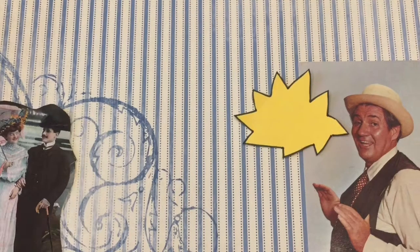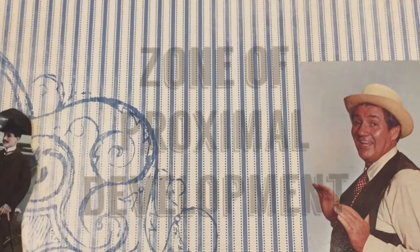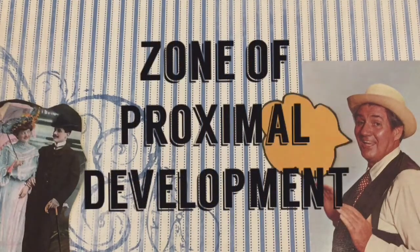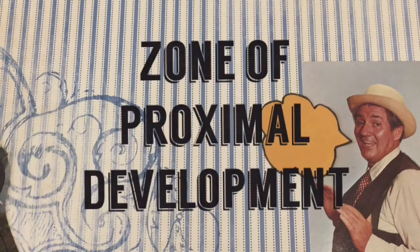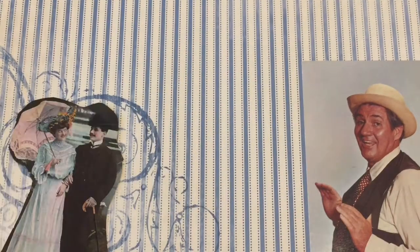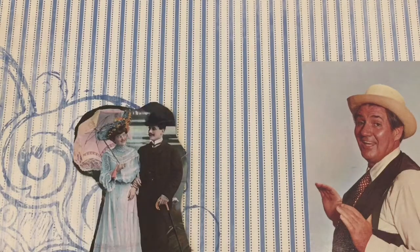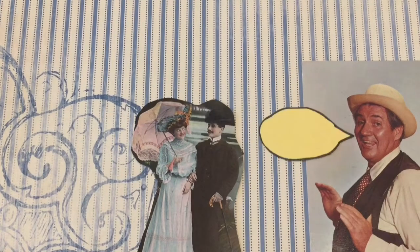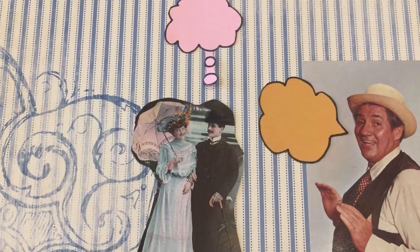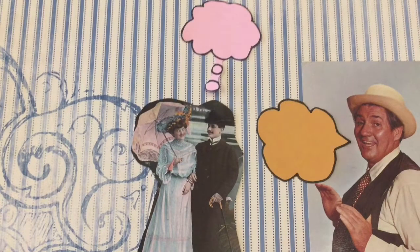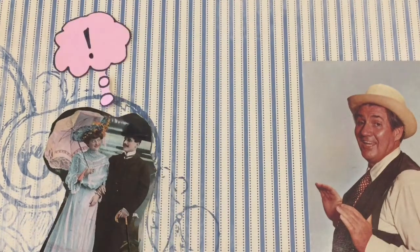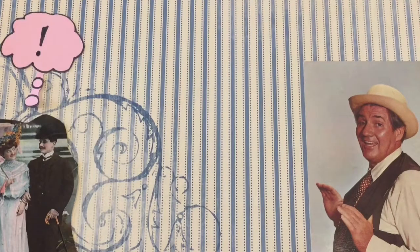Vygotsky developed a social theory of learning which includes the concept of the zone of proximal development. According to Vygotsky, in order for learning to occur, each learner has a particular zone within which they are ready to take the next learning step. When a student interacts with a responsive teacher or more capable peer while attempting to solve a problem inside their learning zone, they are primed for learning success. It is therefore important for teachers to formatively assess and adapt their teaching and activity strategies to ensure that instruction and learning activities occur inside their students' learning zones.